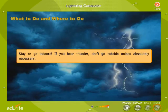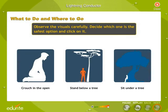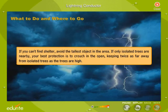Stay or go indoors. If you hear thunder, don't go outside unless absolutely necessary. If you can't find shelter, avoid the tallest object in the area. If only isolated trees are nearby, your best protection is to crouch in the open, keeping twice as far away from isolated trees as the trees are high.